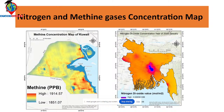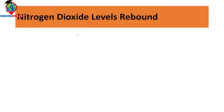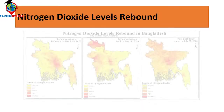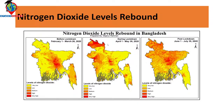Here is another map showing nitrogen dioxide concentration for January 2020. The unit here is mole per meter squared. Sentinel-5 satellite imagery provides different types of units, but we can easily convert them. There's also a map showing nitrogen dioxide levels rebounding in Bangladesh across different time periods, downloaded from Google Earth Engine platform with a classification of very low, low, medium, high, and very high concentration.